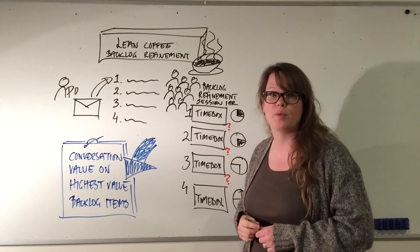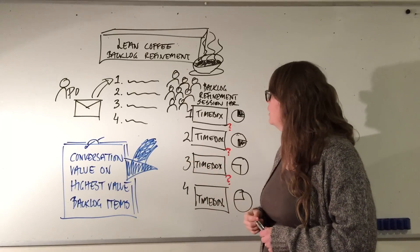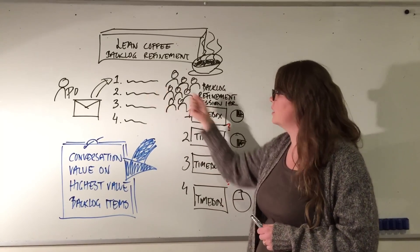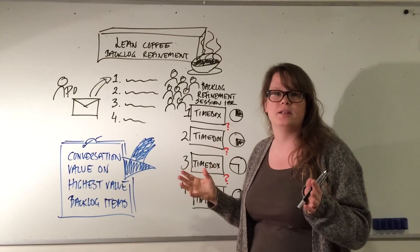The team decides with direction from the PO, because this is about value. Then you go into the second time box. If you're pulling the next item, you start from wherever that item is.